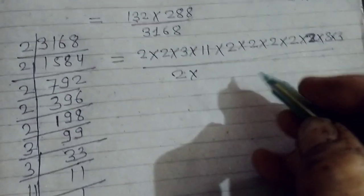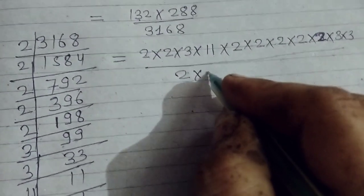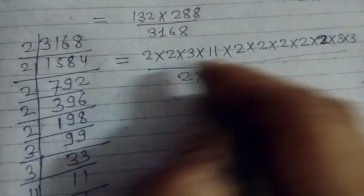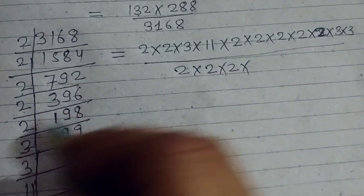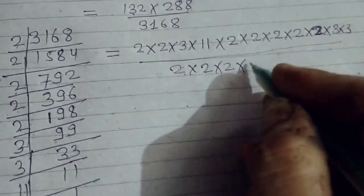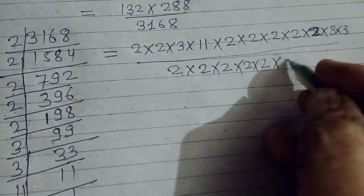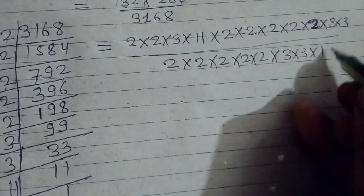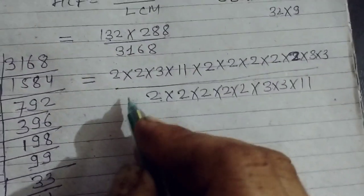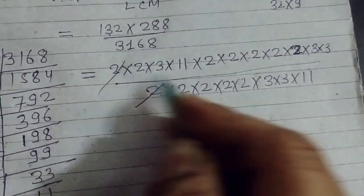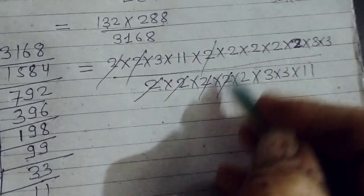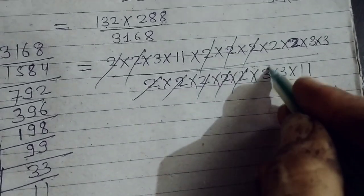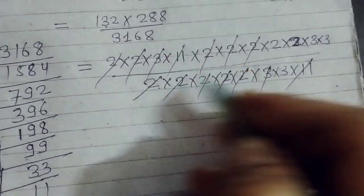So its factors are 2 times 2, times 2, times 2, times 2, five times 2, then 3 and 11. Now we cancel the common factors from 132 times 288 divided by 3168: we cancel 2, 2, 2, 2, then 3, 3, and 11.